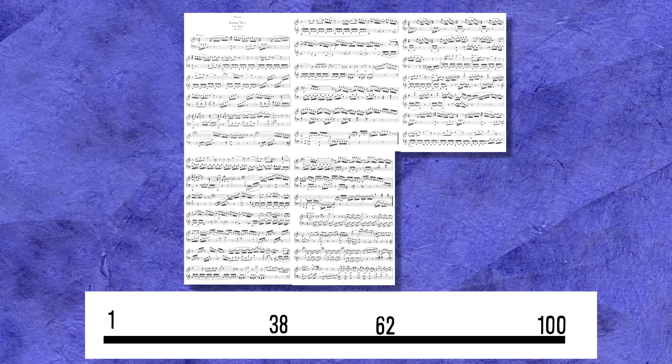Another plausible example is the first movement of Mozart's Sonata in C Major, K279, which has 100 measures and whose main sections come at bar 62 and 38, very close to Fibonacci proportions. Now, no one's suggesting that Mozart or Chopin consciously worked with Fibonacci numbers,